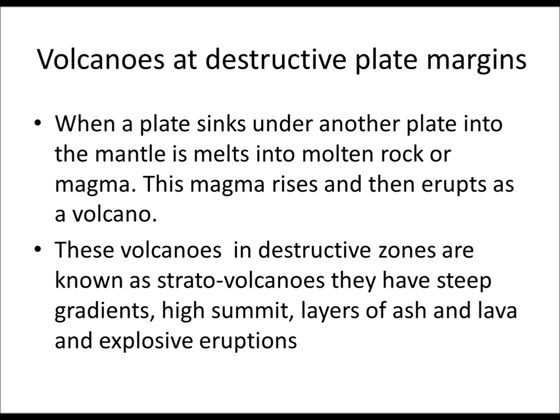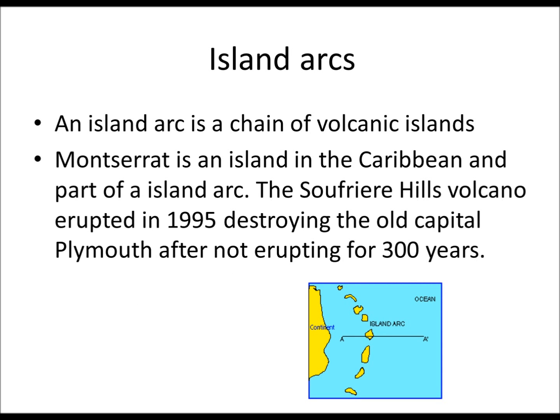An example of this would be Mount Etna. And then we get island arcs. An island arc is a chain of volcanic islands, for example Montserrat in the Caribbean — that's part of an island arc. The Soufrière Hills volcano erupted in 1995, destroying the old capital of Plymouth, after not erupting for 300 years.